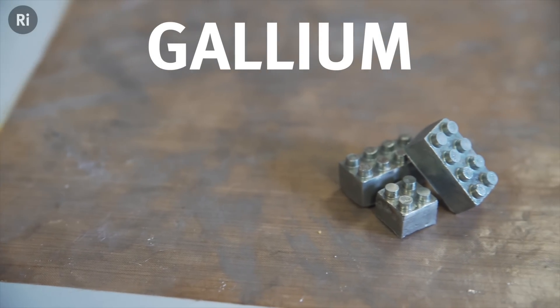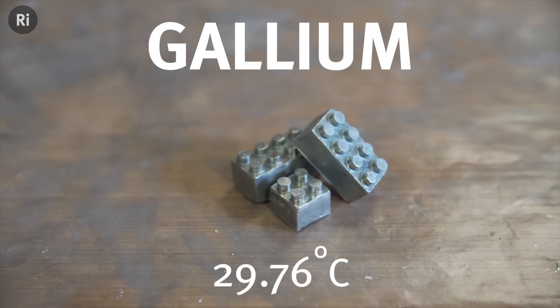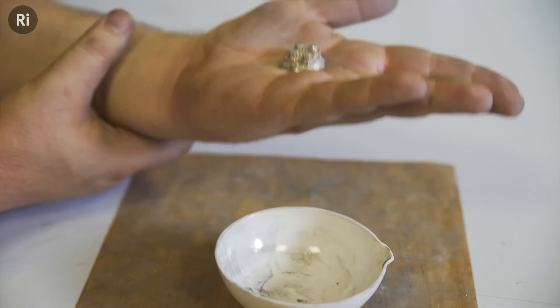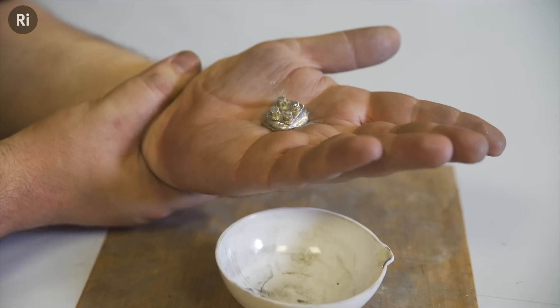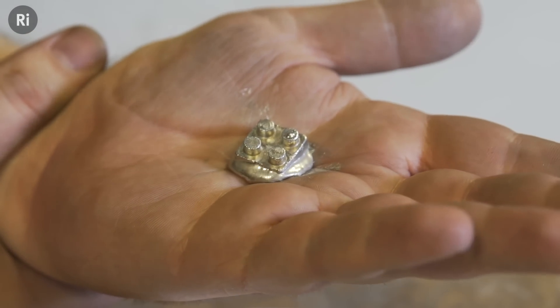This is gallium. It's a metal, but it has a melting point of 29.76 degrees Celsius, which means that it will melt in your hand to produce a beautiful silvery liquid like this.